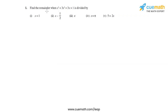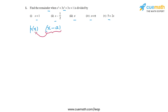The first question asks us to find the remainder when this polynomial is divided by all of the given linear polynomials. This question is based on the Remainder Theorem, which states that if any polynomial p(x) is divided by a linear polynomial (x - a), the remainder can be found simply by substituting the zero of that linear polynomial into the polynomial itself. The zero of the divisor is x = a, and p(a) gives the remainder.